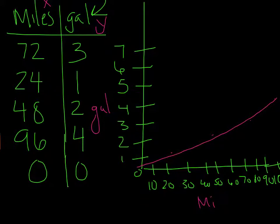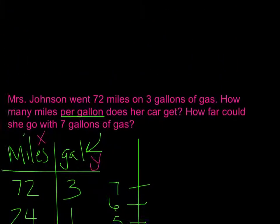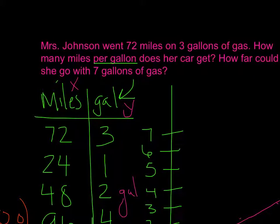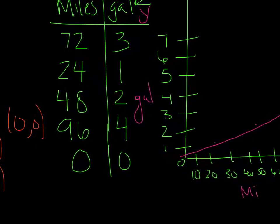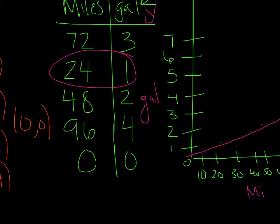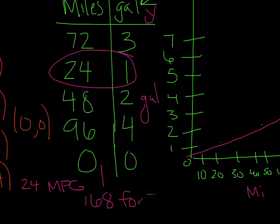Now let's go back up here to the question. I need to find out how far can she go in 7 gallons of gas. I know that 1 gallon is 24 miles, so 24 miles per gallon. And if I multiplied that by 7, I would get a pretty large number because 1 mile is 24 miles. So 7 miles is just 7 times that, and that gives me 168 after 7 gallons of gas.